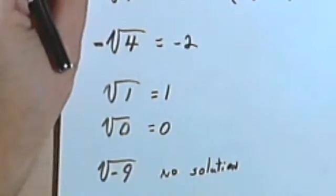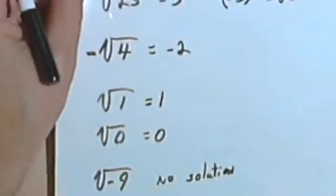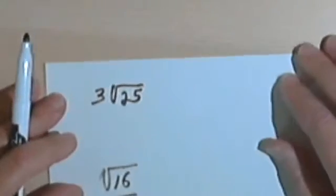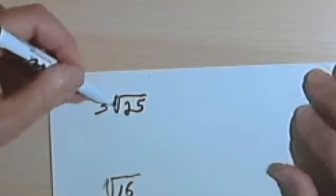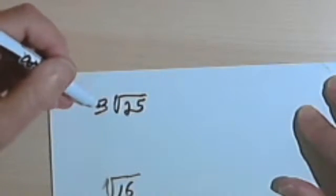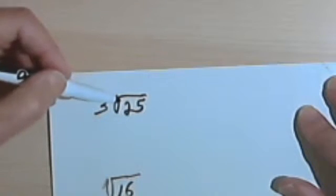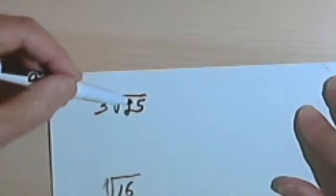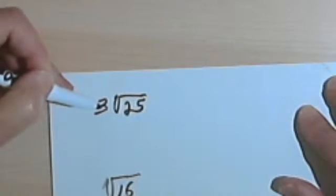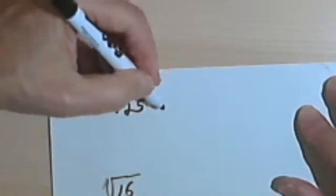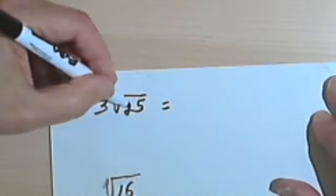Let's look at some problems where we have to simplify expressions containing radical signs. So we're starting with 3 times the square root of 25. The main thing to remember is that until you've gotten rid of the radical sign, you can't do anything with this 3. So first I have to find the square root of 25.